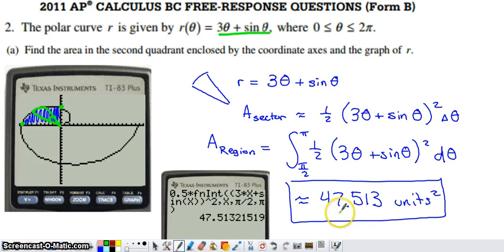I got approximately 47.513 square units. I like to check the validity whenever possible. The area of the second quadrant I'm seeing is 10 times 10, or 100 square units. It seems like I have about half of that area accounted for by the shaded region, so this definitely seems valid.